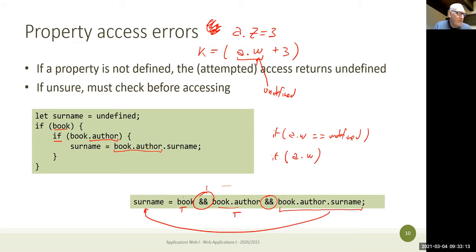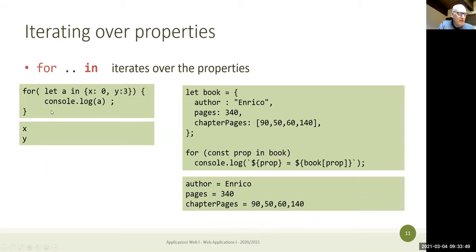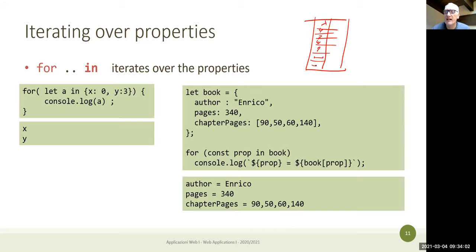If you define variables without let or var — that's forbidden in strict mode. In older JavaScript you'd create global variables that way, but now you get an error. Whenever you use a module, you're automatically in strict mode, so that's forbidden. It's not possible anymore to create global variables by forgetting to put let or var in front. If you have an object and want to know which properties it has, you can iterate over them.